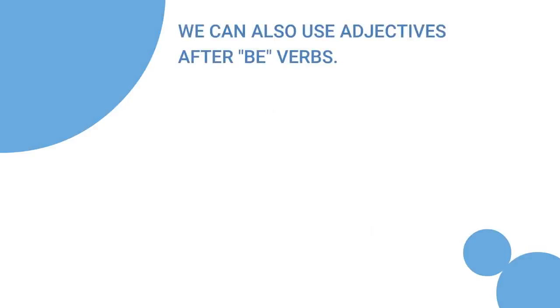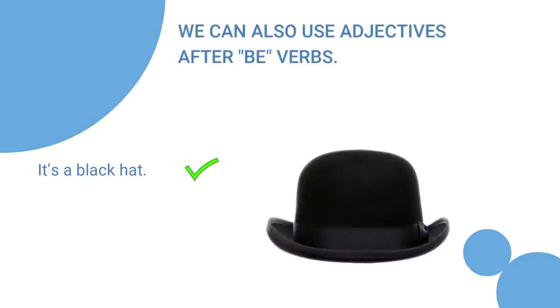We can also use adjectives after B verbs. It's a black hat. We can say the hat is black. We don't say the hat black.